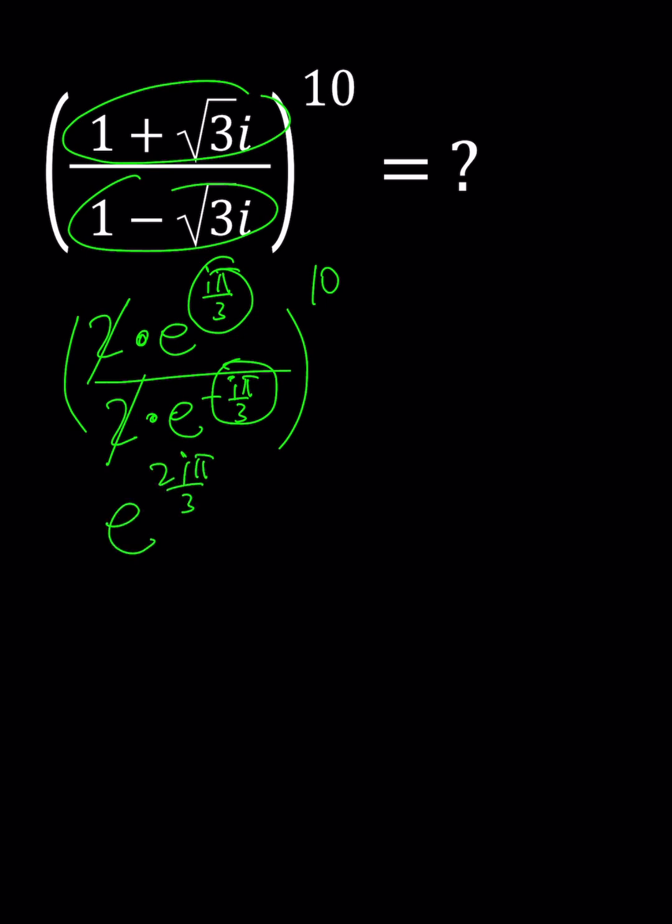In other words, the argument is just 2 pi over 3, but we need to raise it to the 10th power, and that's going to give us e to the power 20i pi over 3. And when you take out multiples of 2 pi i from it, which is going to give you e to the power 2i pi over 3, which means it's 2 pi over 3 indeed. And this would become negative 1 half plus root 3 over 2i, and that will be the answer.